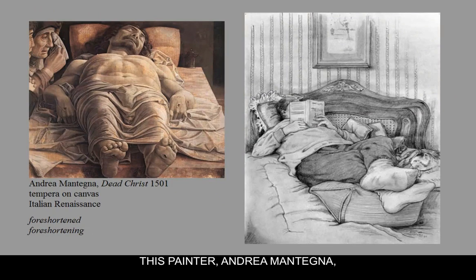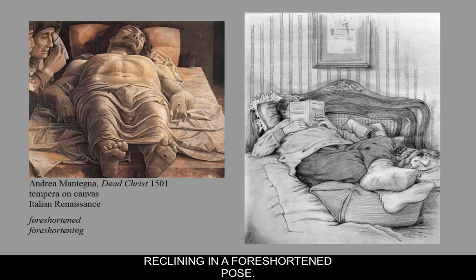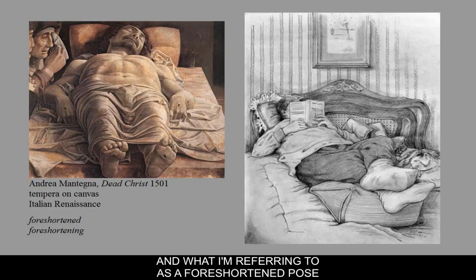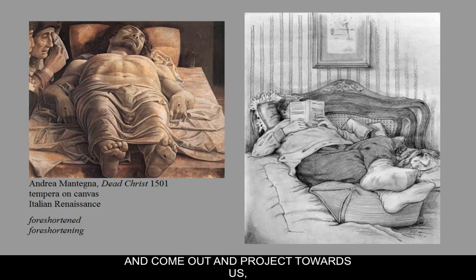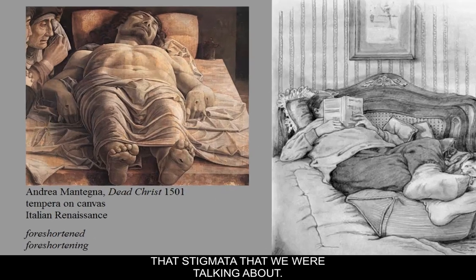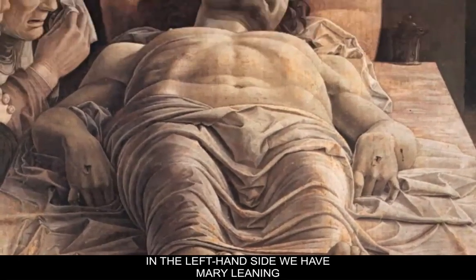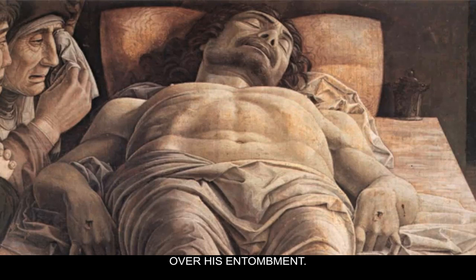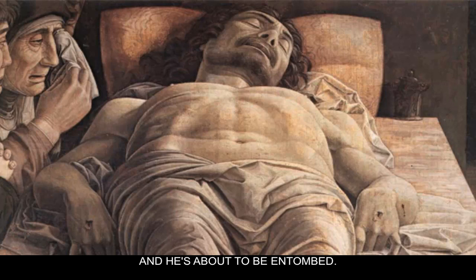This painter, Andrea Mantegna, on the left-hand side shows Jesus reclining in a foreshortened pose. Jesus's feet are in the foreground and project towards us. We can see his wounds in his hands and his feet — the stigmata. On the left-hand side, we have Mary leaning over his entombment. He has been taken down off the cross and is about to be entombed, and she's mourning over his death.